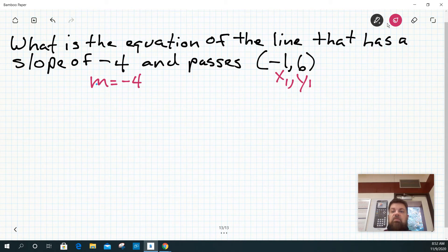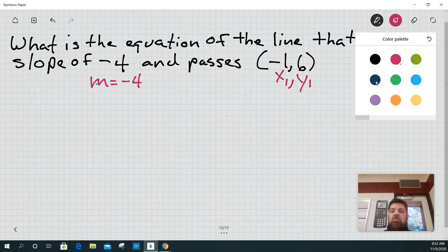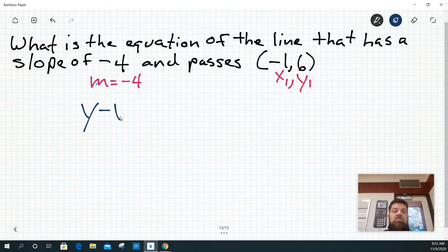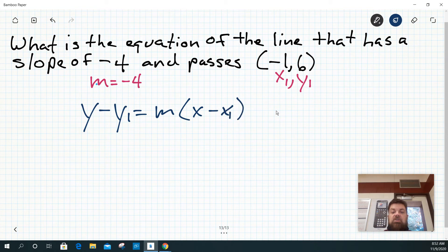So now, to fill this out, to figure out what the equation of the line is, I'm going to use this formula. It's called the point-slope formula. Now, the reason it's called the point-slope formula is you need a point and the slope to finish it.